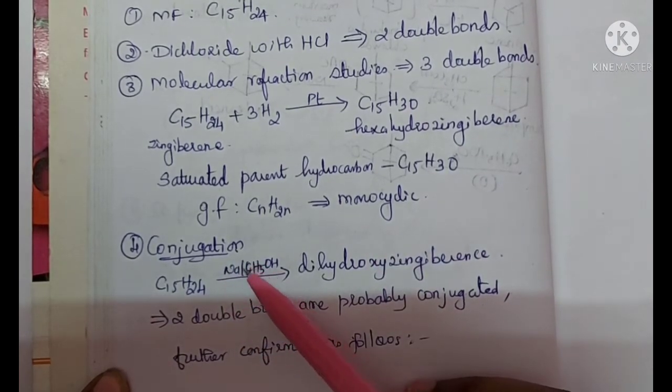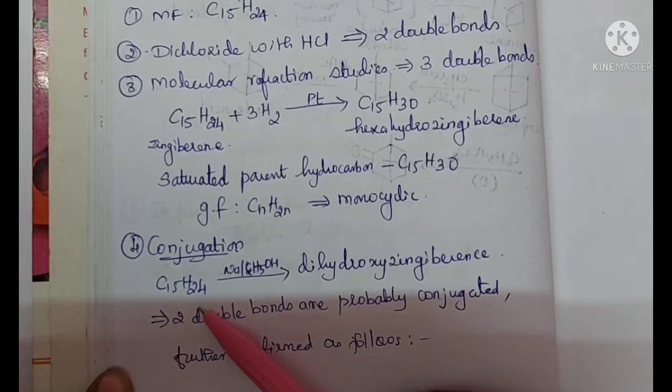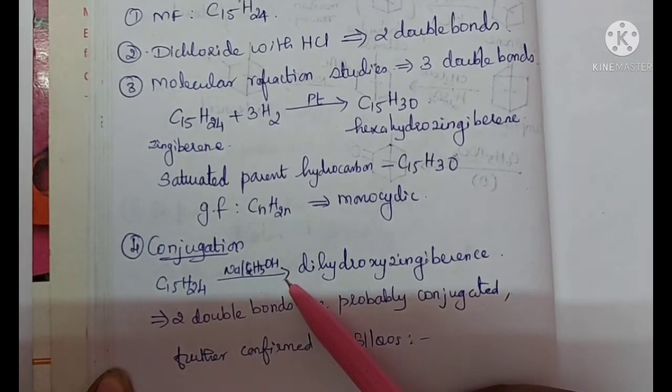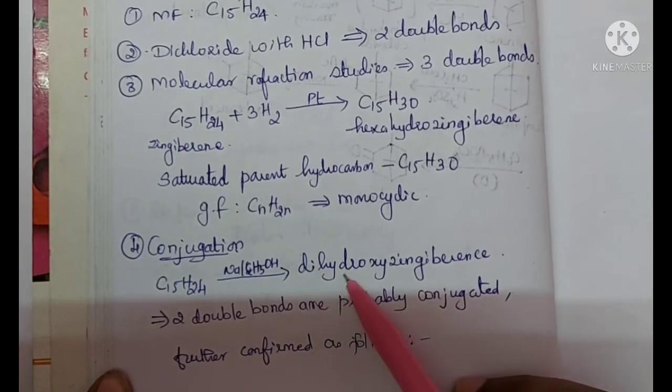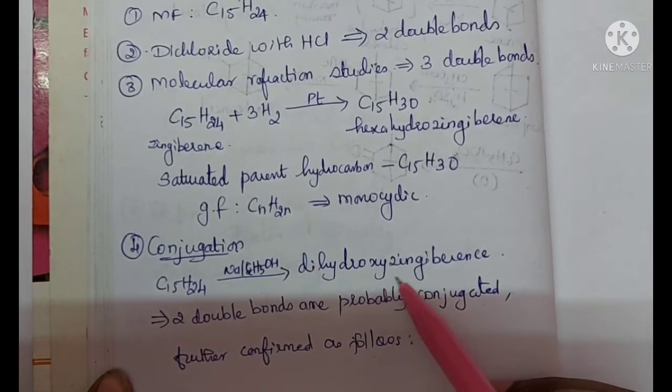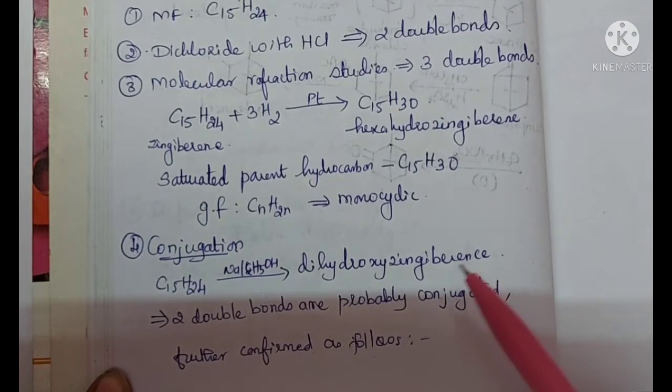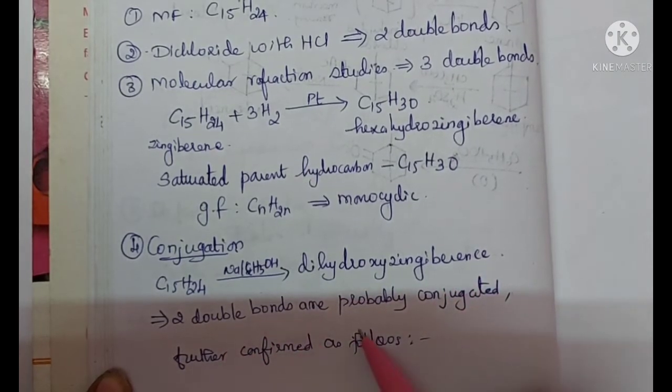Zingiberine is treated with sodium and ethanol, so we get dihydroxy Zingiberine. It adds two hydroxyl groups to form dihydroxy Zingiberine. So these two double bonds must be conjugated, and it is further confirmed by the following reactions.